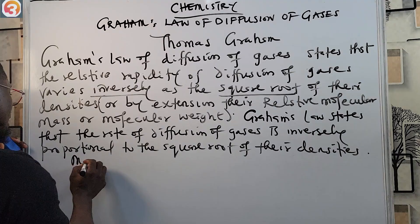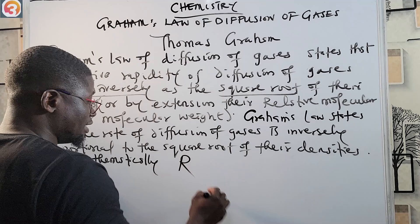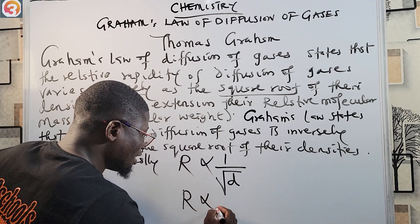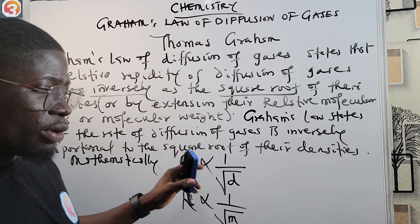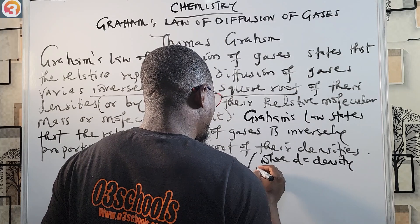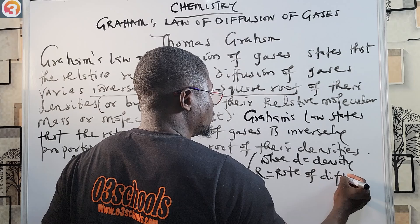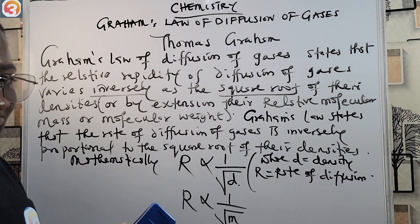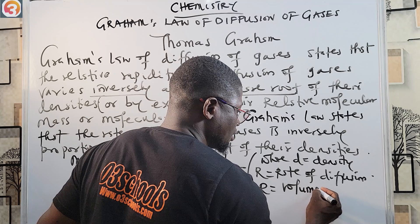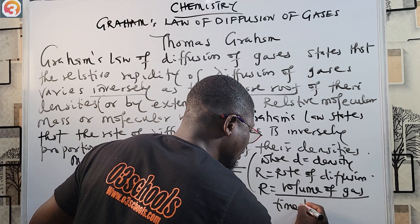Mathematically, we can say that the rate of diffusion R is inversely proportional to the square root of density (d), or inversely proportional to the square root of relative molecular mass (m). Also, the rate of diffusion itself has a formula: rate equals the volume of the gas divided by the time taken to diffuse.